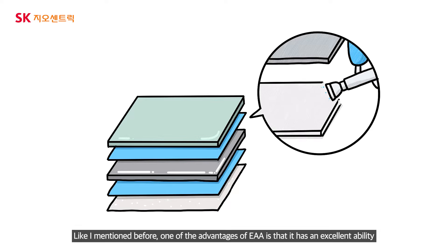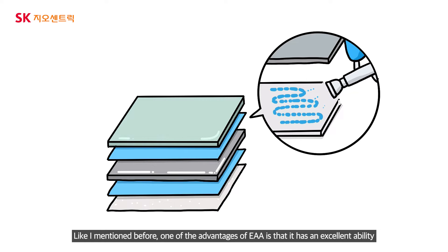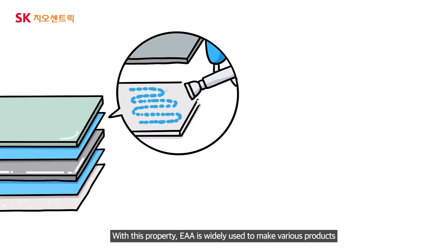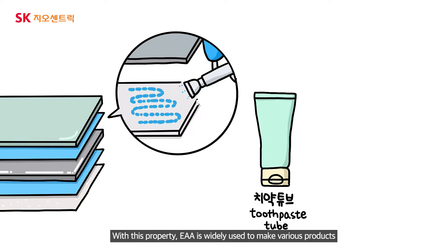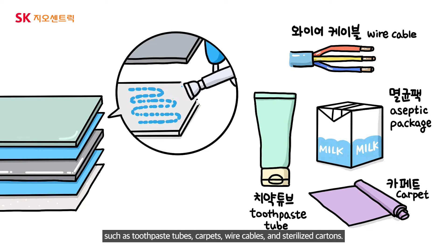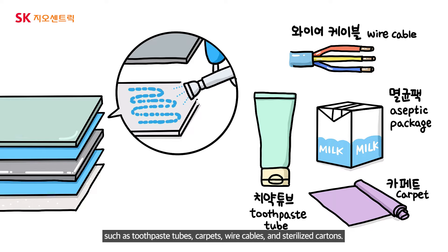One of the advantages of EAA is that it has an excellent ability to glue metals and heterogeneous materials together. With this property, EAA is widely used to make various products such as toothpaste tubes, carpets, wire cables, and sterilized cartons.